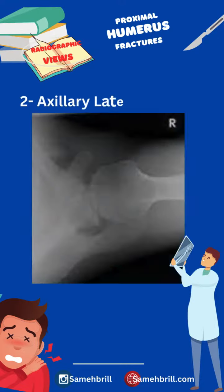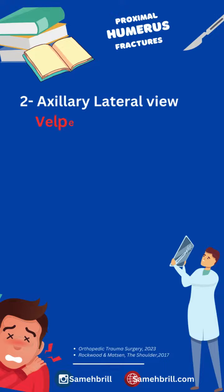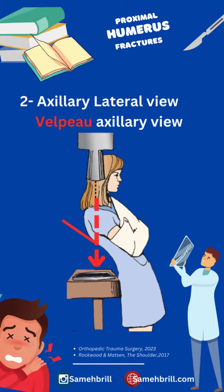Next is the conventional axillary lateral view. This view is not only painful for the acute patient, but it can cause further displacement of the fracture. So it's preferred to do a modified view called the Velpeau view. This view is obtained by directing the x-ray beam from superior to inferior, as the patient leans backward 20-30 degrees over the cassette with the arm in a sling.